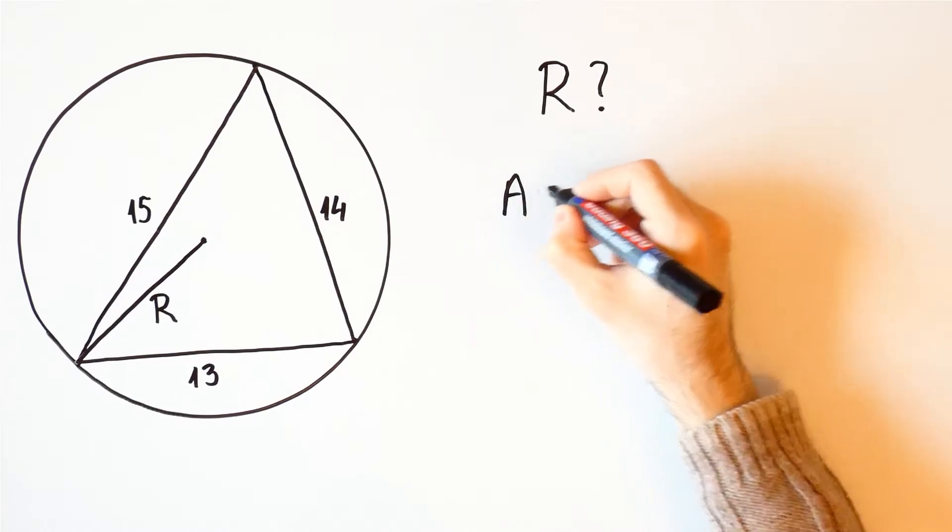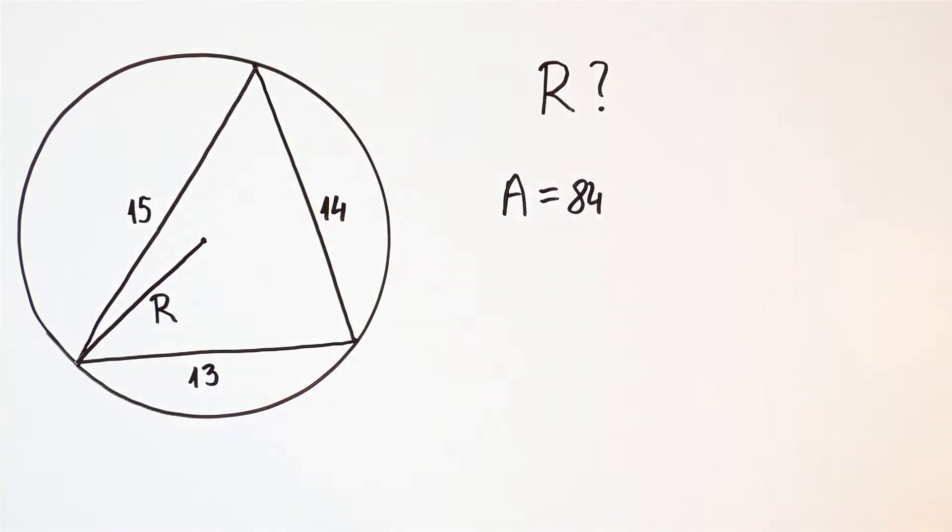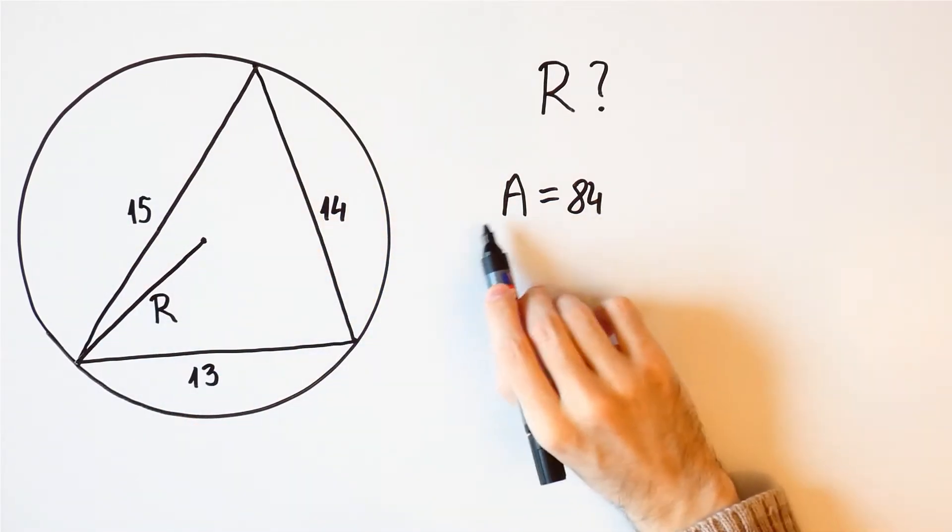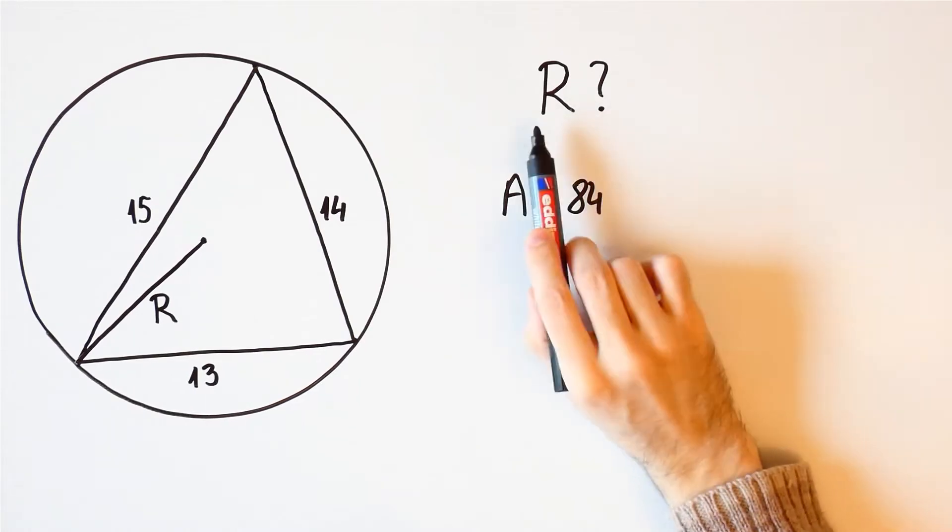The area is 84. Now we'll find the radius of its circumscribed circle, also known as the circumradius, but first we'll show what the area has to do with the circumradius.